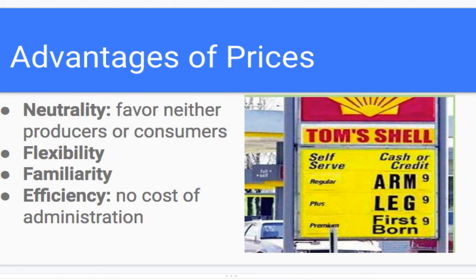The advantages of price — the book gives four different examples. First, neutrality: prices favor neither producers nor consumers. In a competitive market economy, prices are neutral because they represent the compromises that both sides are willing and can live with.